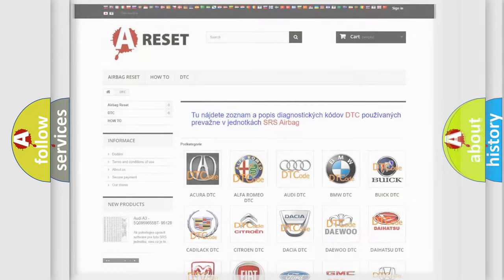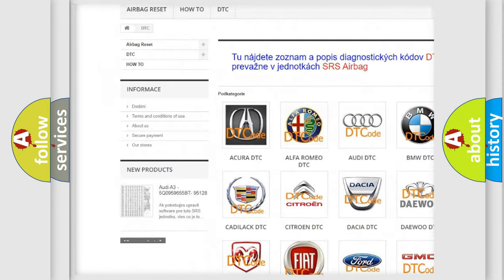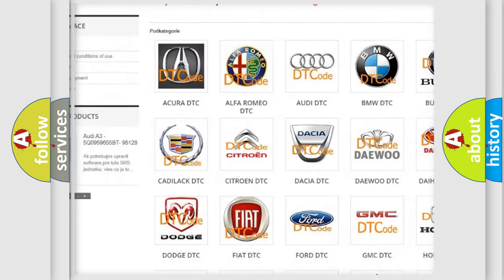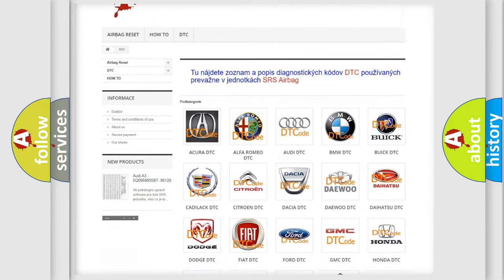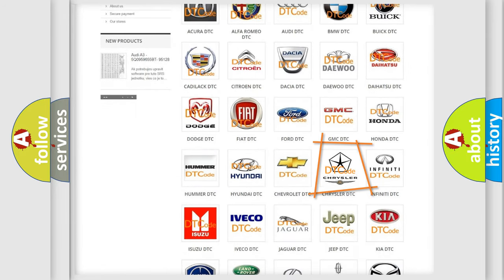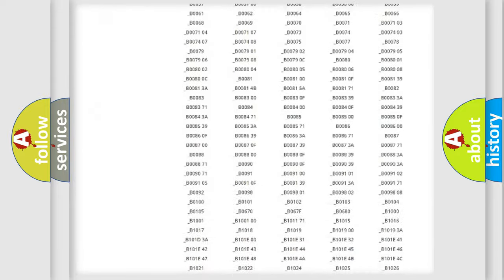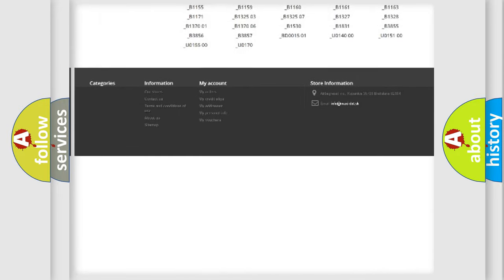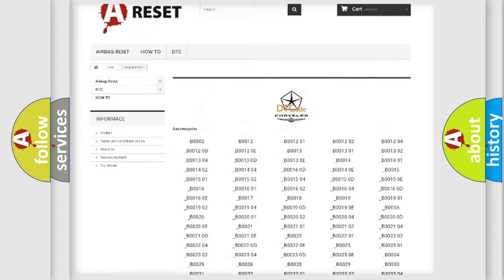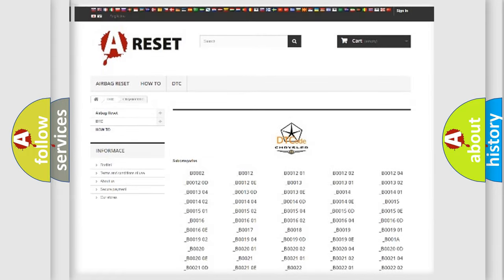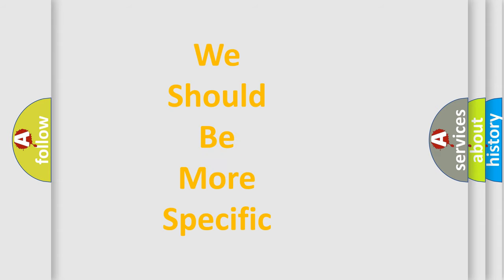Our website airbagreset.sk produces useful videos for you. You do not have to go through the OBD2 protocol anymore to know how to troubleshoot any car breakdown. You will find all the diagnostic codes that can be diagnosed in Chrysler vehicles, also many other useful things. The following demonstration will help you look into the world of software for car control units.